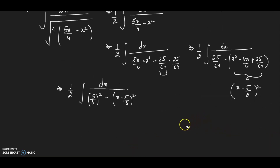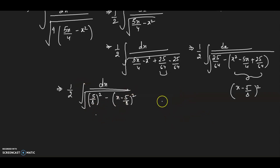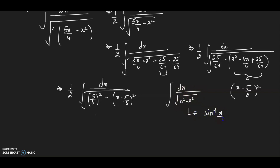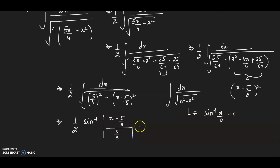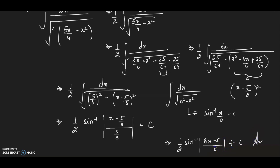This is of the form integration of dx divided by √(a² − x²), and the formula gives sin⁻¹(x/a) + C. So the answer is 1/2 · sin⁻¹((x − 5/8)/(5/8)) + C, which after simplification gives 1/2 · sin⁻¹((8x − 5)/5) + C.